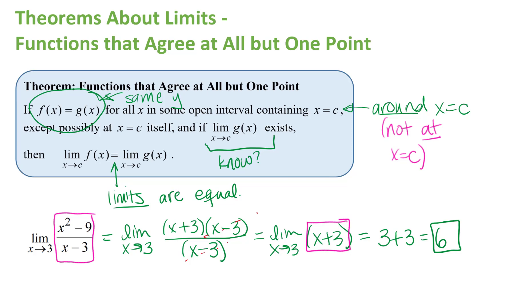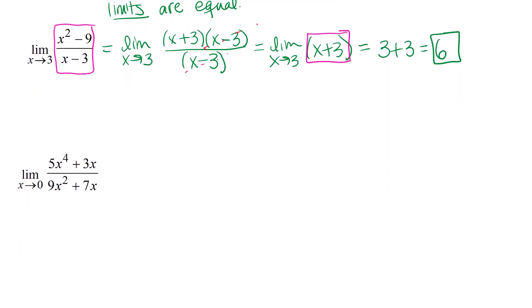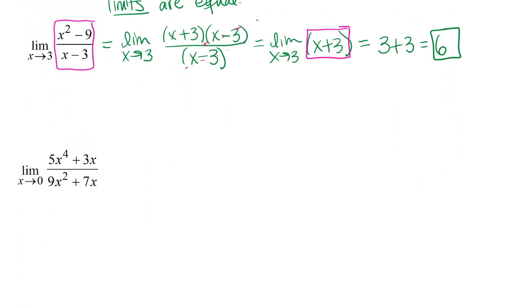Let's look at another example. We again have a rational function. If you try to substitute x equals 0 in the denominator you get 0, so the substitution shortcut theorem doesn't apply. That doesn't mean the limit doesn't exist — it means I can't use substitution. However, I can do the same kind of algebra simplifications as the last problem to hopefully get an easier limit to deal with.